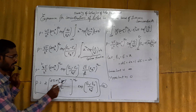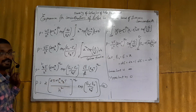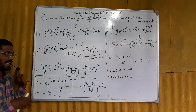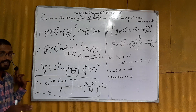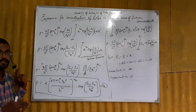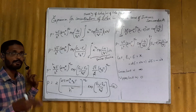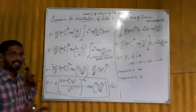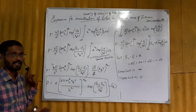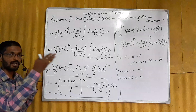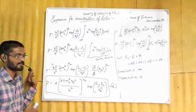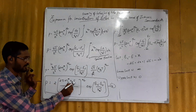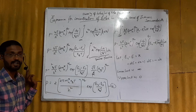The density of holes depends upon temperature. As discussed previously, in intrinsic semiconductors, as temperature increases, more covalent bonds break, creating more charge carriers — more electrons in the conduction band and more holes in the valence band. Therefore, the density of holes is proportional to temperature.